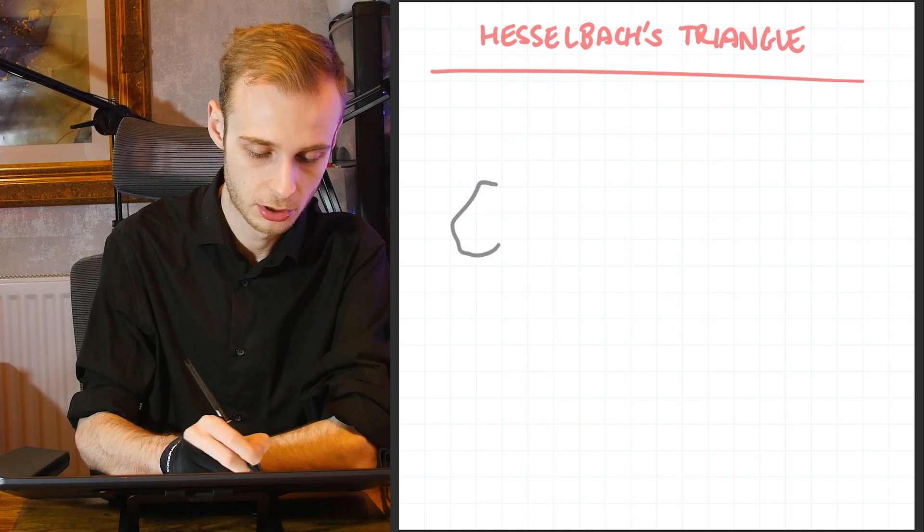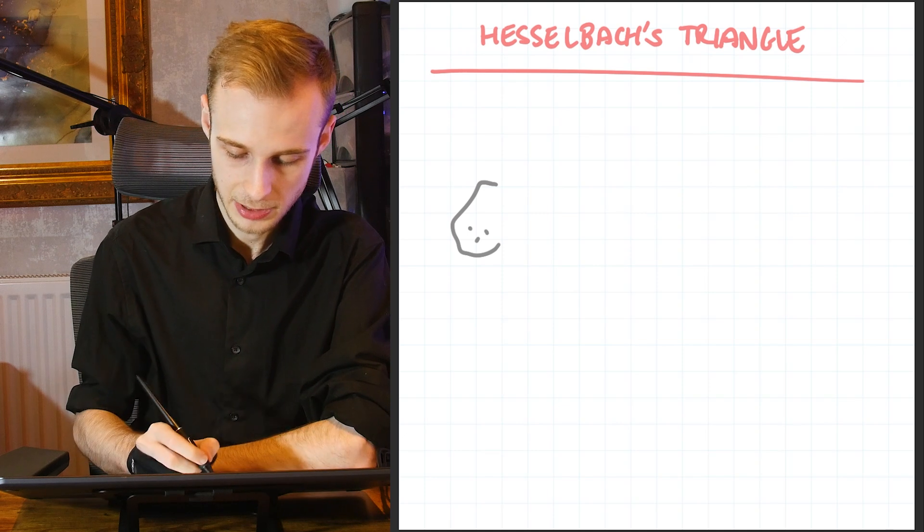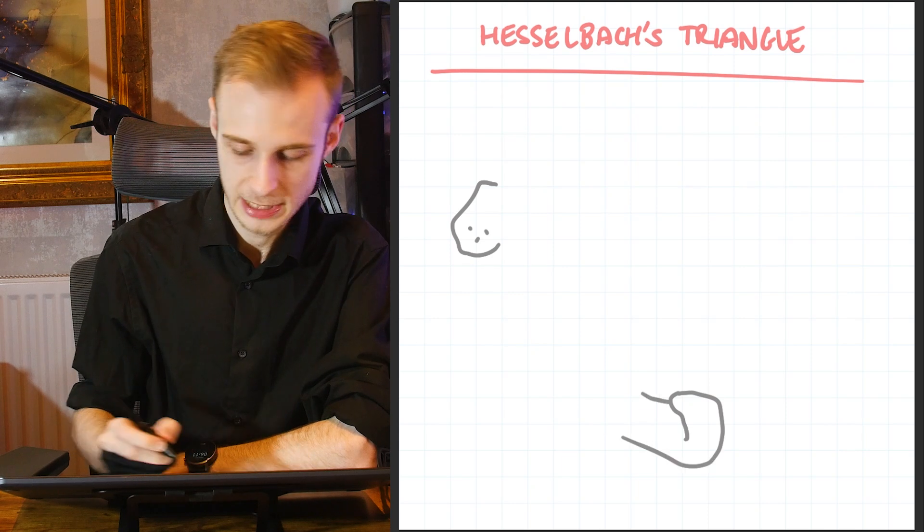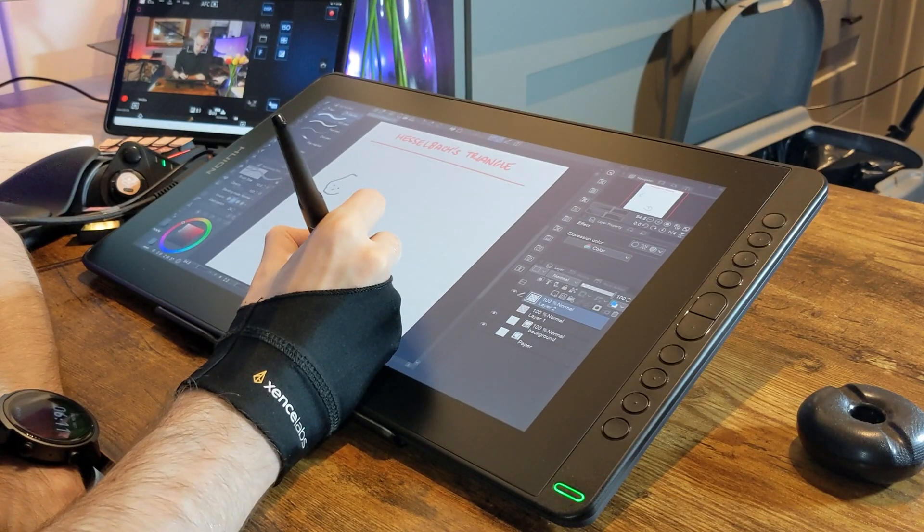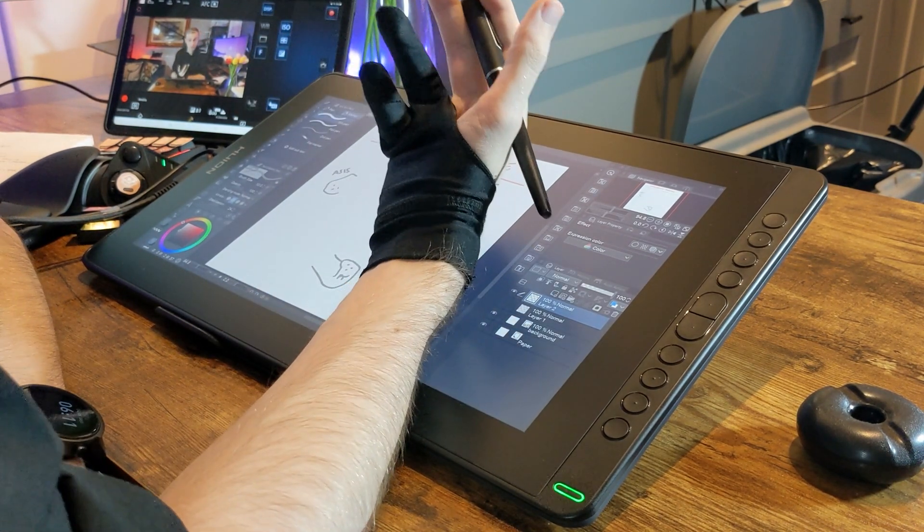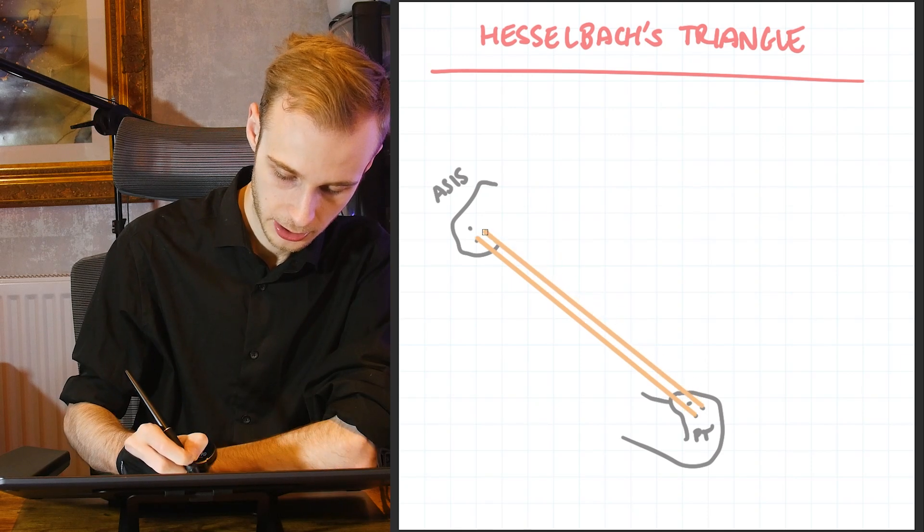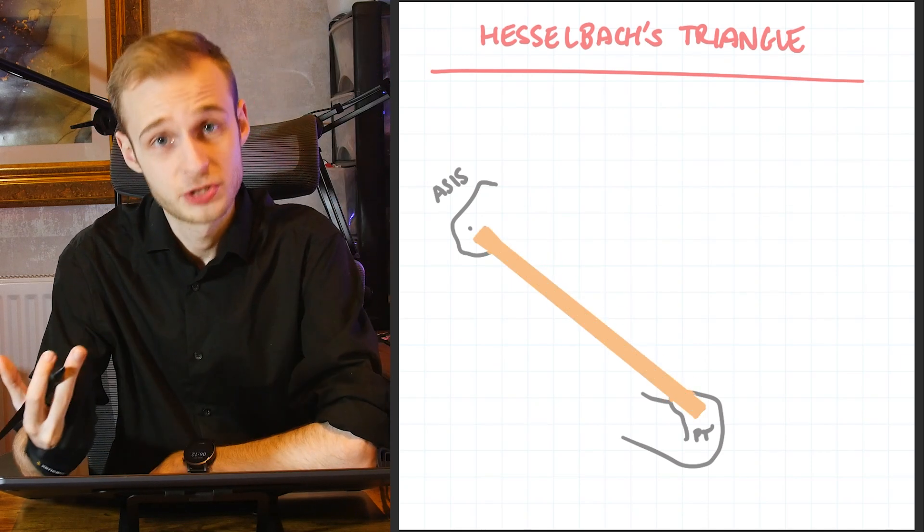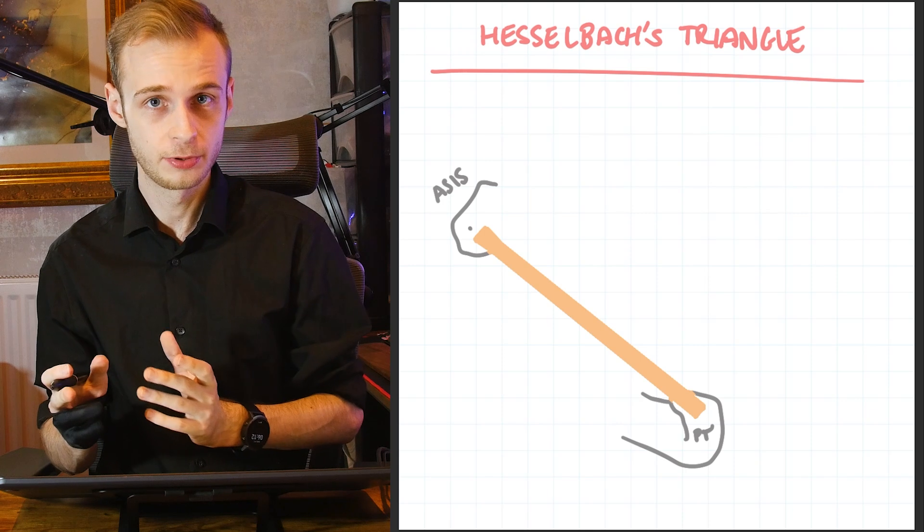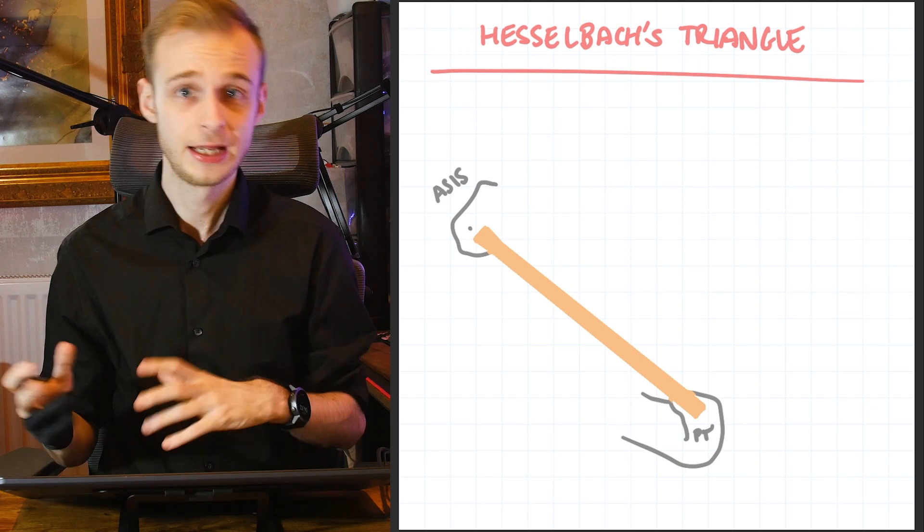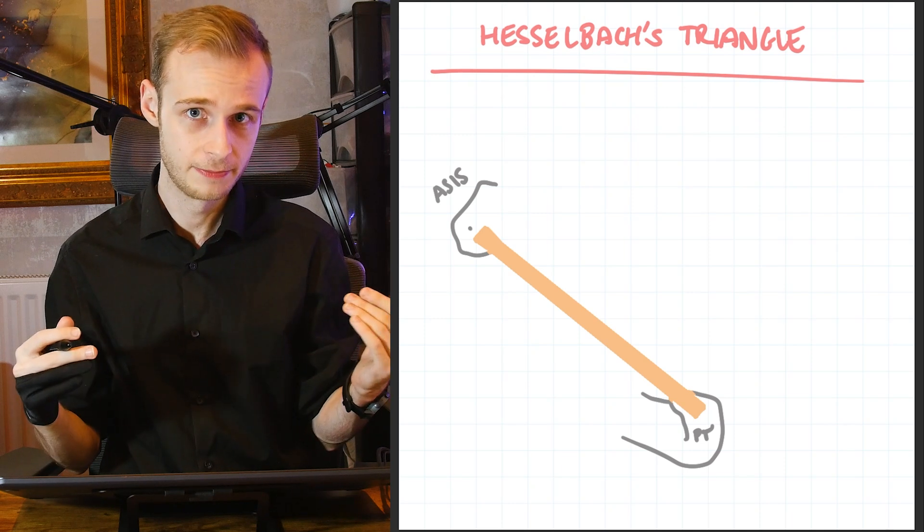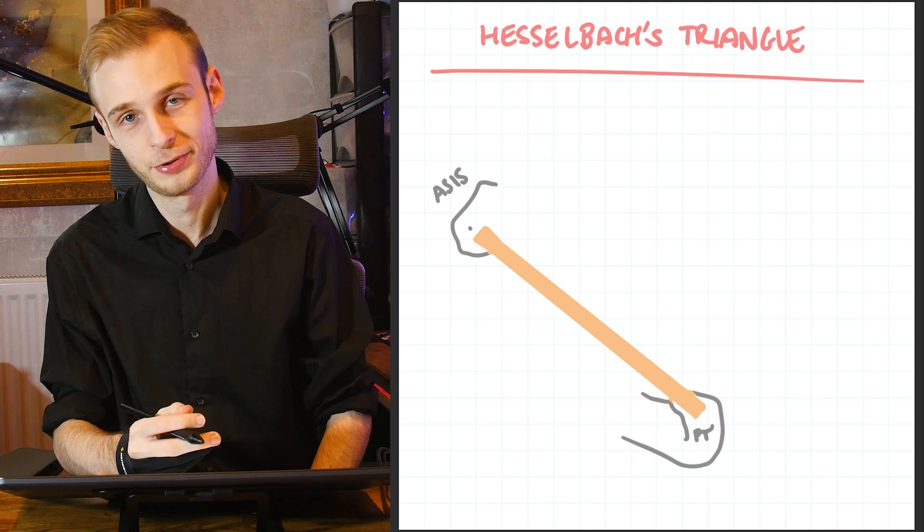We're going to need those two points again, so I'm going to draw on my ASIS up here and my pubic tubercle down here, so we've got our PT and our ASIS. We're going to need the inguinal ligament again, so let's just draw on our ligament again. As I'm sure you will remember, any triangle has three sides. In this case, we have a medial border, a lateral border, and an inferior border. Now luckily for us, we already know what the inferior border is—it's the inguinal ligament.